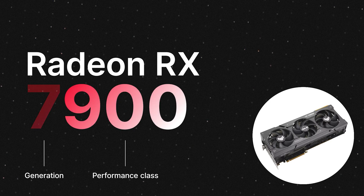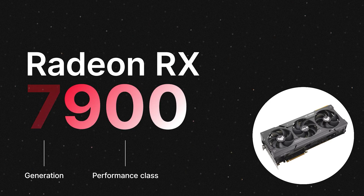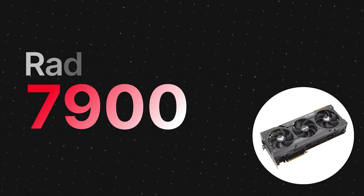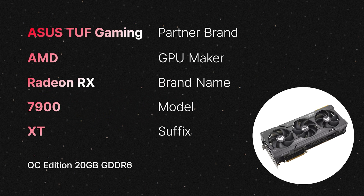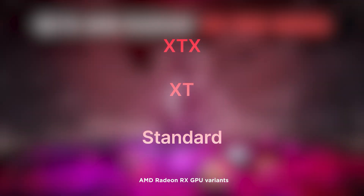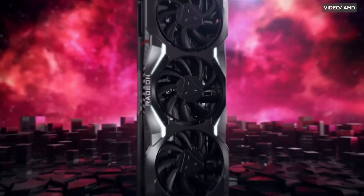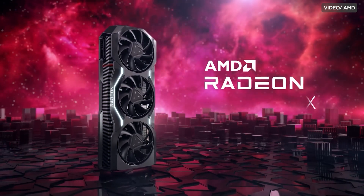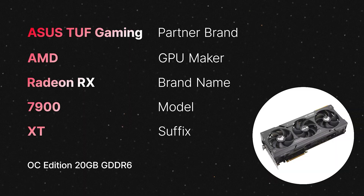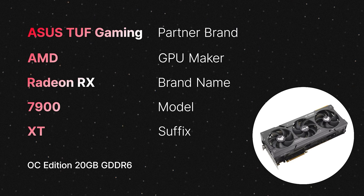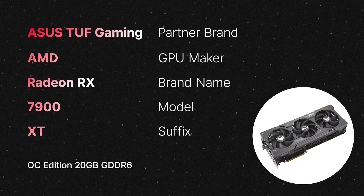The remaining three digits refer to the performance class — again, higher numbers offer greater performance. In this example, the 7900 is among the top-spec GPU variants from AMD. After the four-digit number comes the suffix "XT," which generally means it boasts even greater performance than its standard counterpart. There's even an RX 7900 XTX variant, which is the flagship of the RX 7000 series. The term "OC" stands for overclocked, and "20GB GDDR6" describes the amount and type of video memory.